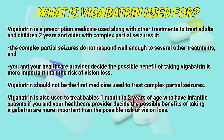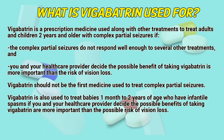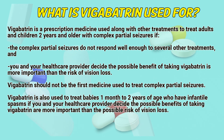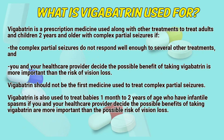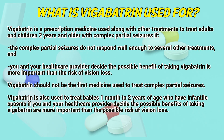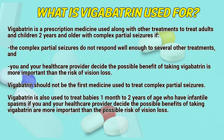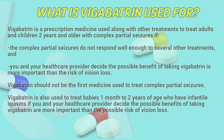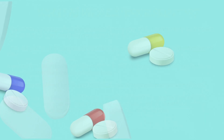Vigabatrin should not be the first medicine used to treat complex partial seizures. Vigabatrin is also used to treat babies one month to two years of age who have infantile spasms, if you and your healthcare provider decide the possible benefit of taking Vigabatrin is more important than the possible risk of vision loss.